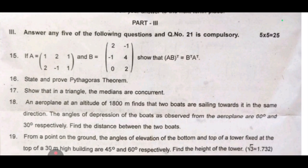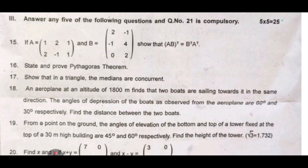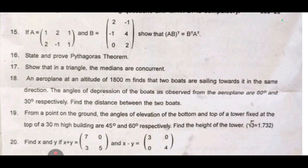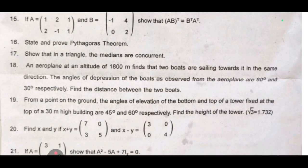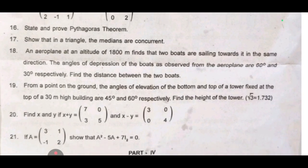17th one: show that in a triangle the medians are concurrent. 18th one: an aeroplane at an altitude of 1800 meter finds that two boats are sailing towards it in the same direction. The angles of depression of the boats are observed from the aeroplane are 60 degree and 30 degree respectively, find the distance between the two boats.